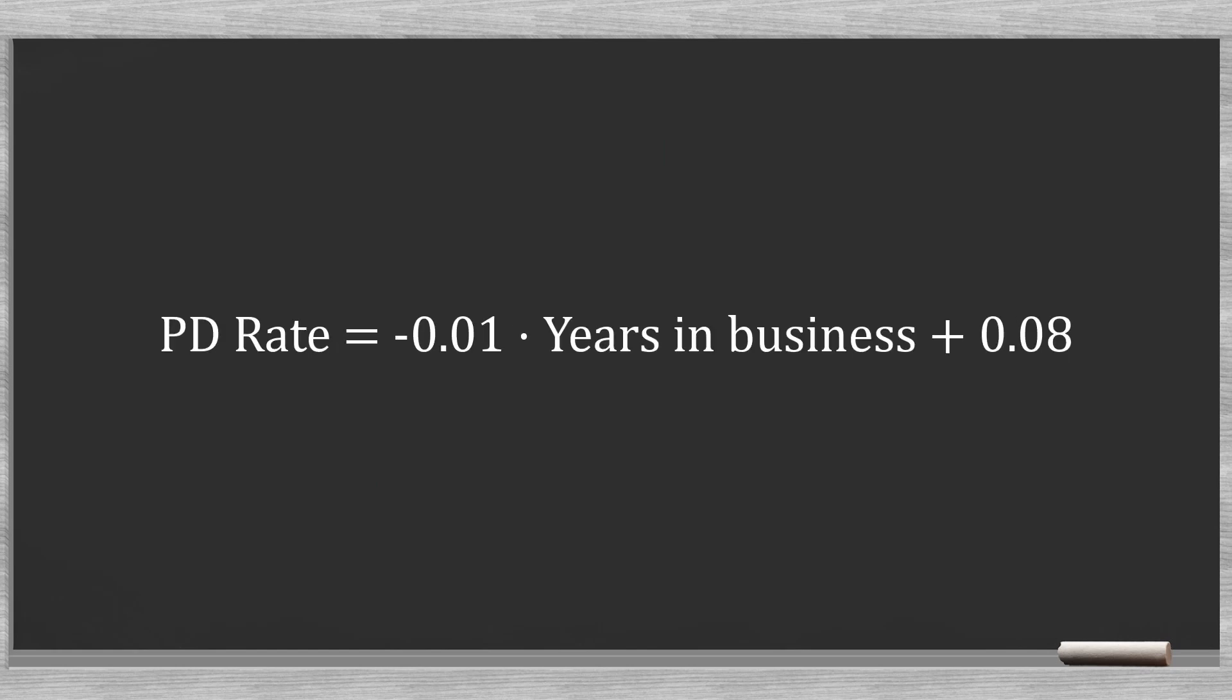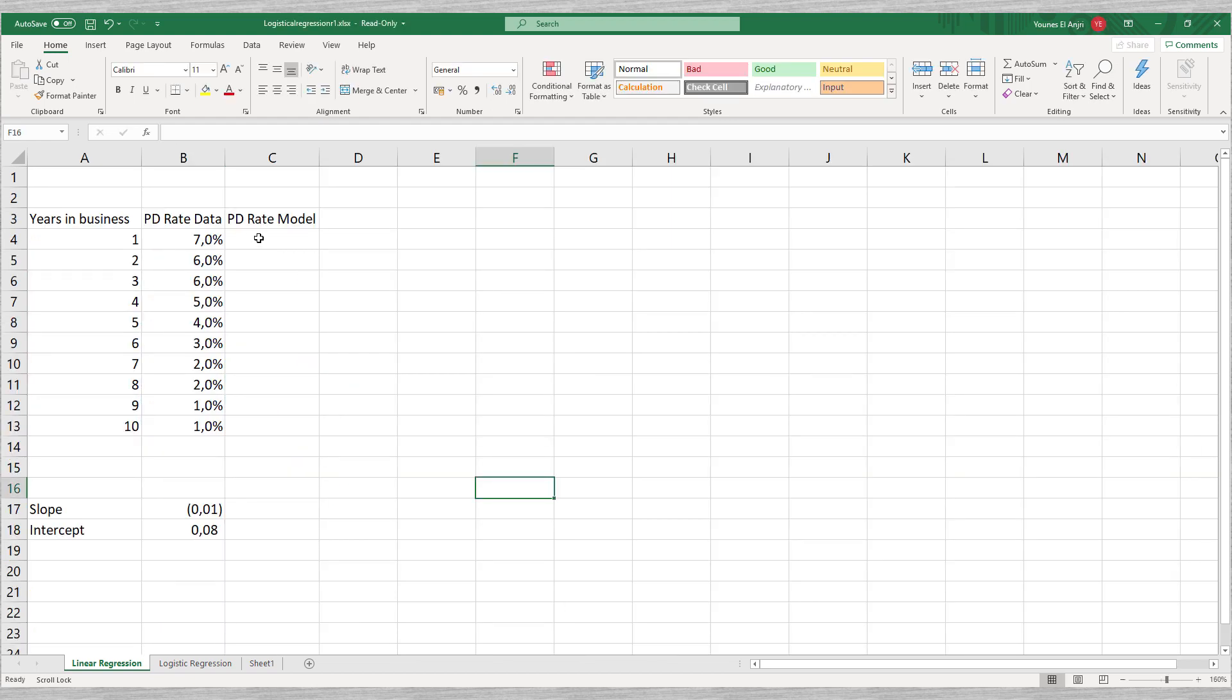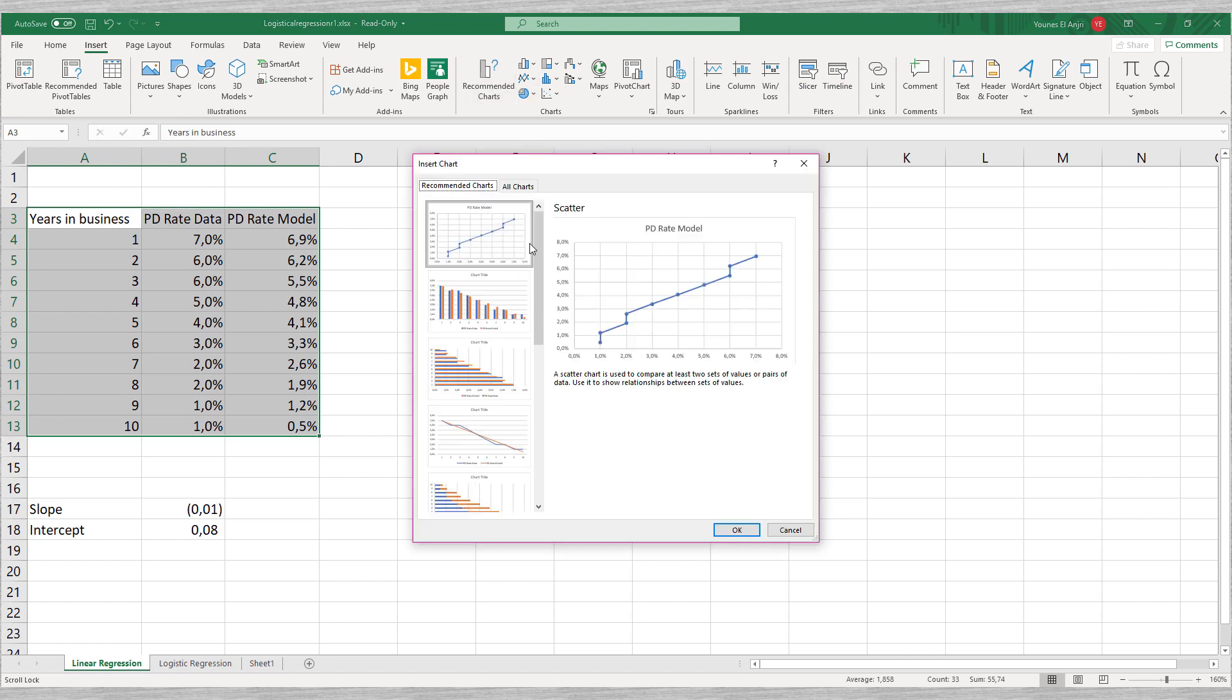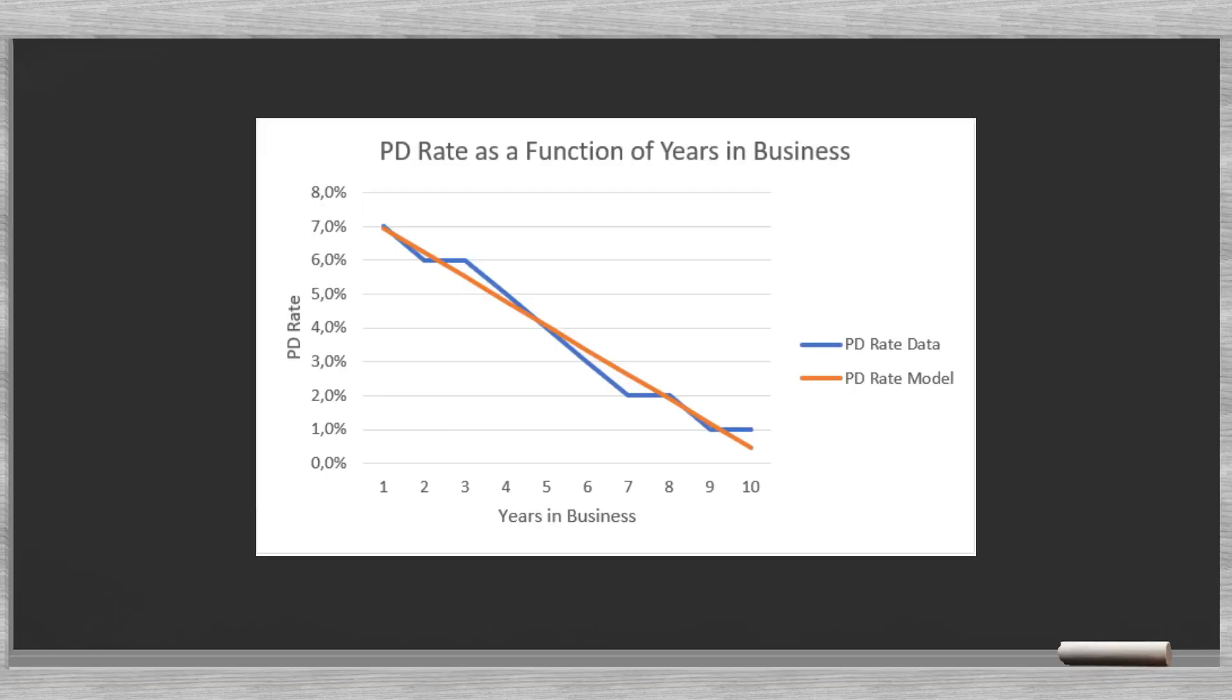PD rate equals minus 0.01 times years in business plus 0.08. We can define this function in Excel and use this to add a column to our table. This third column contains the forecasted PD rates as calculated by our model. Now we have the actual PD rates and the forecasted or modeled PD rates.